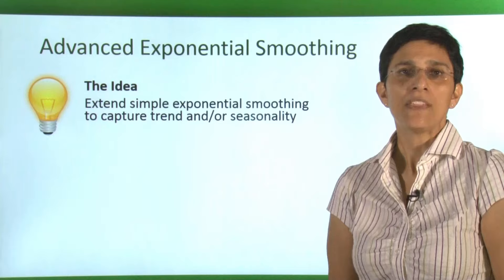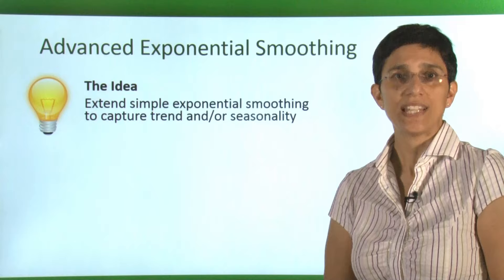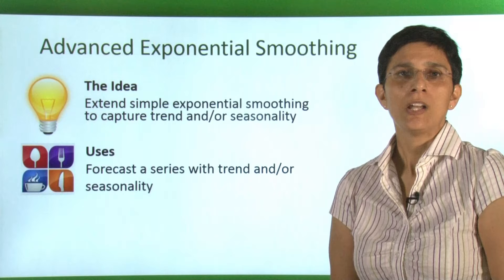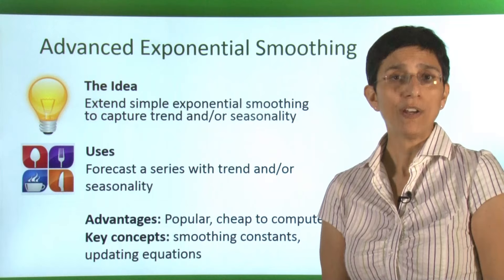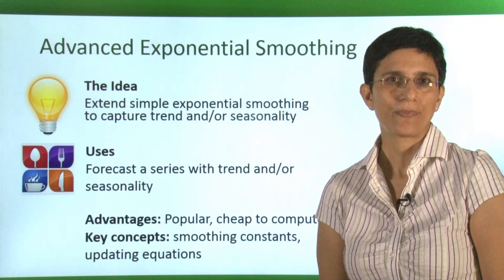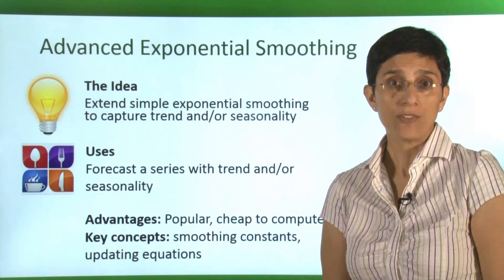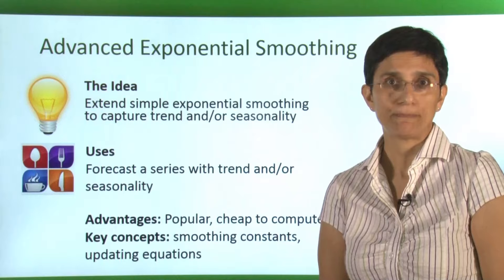The main idea in advanced exponential smoothing is to take the simple exponential smoothing setup and expand it to capture trend and/or seasonality. We can use advanced exponential smoothing for forecasting a series with a trend, seasonality, or both. The advantages are that these methods are very popular and cheap to compute, and therefore very useful for automation. The key concepts are smoothing constants, and we'll have updating equations for estimating these different components.